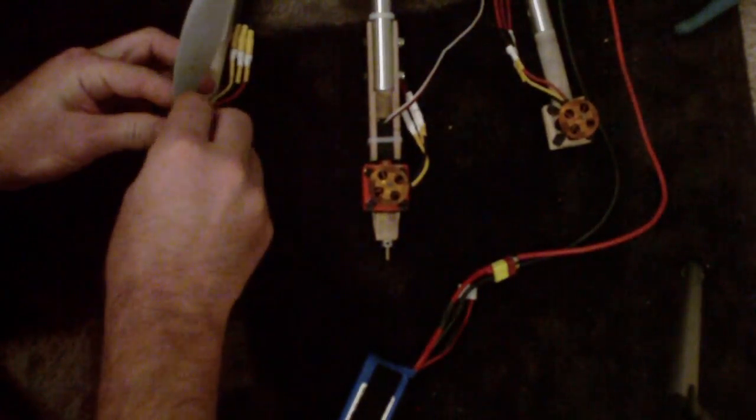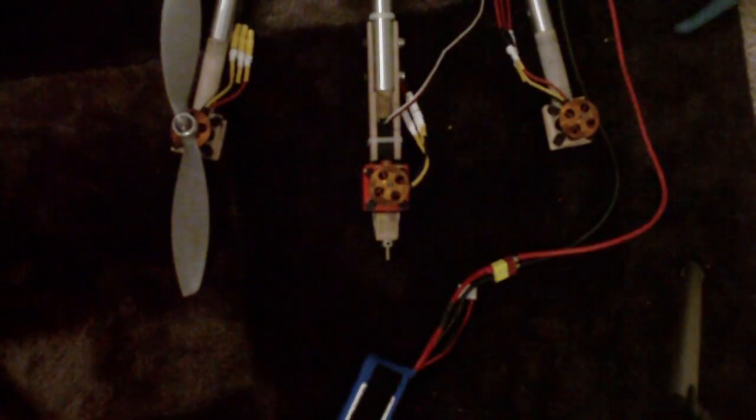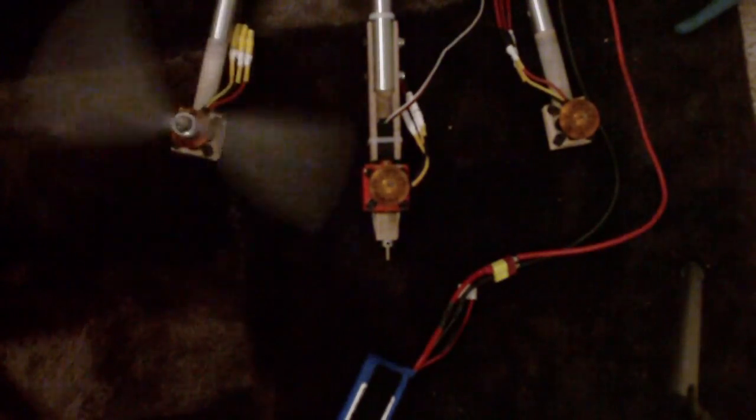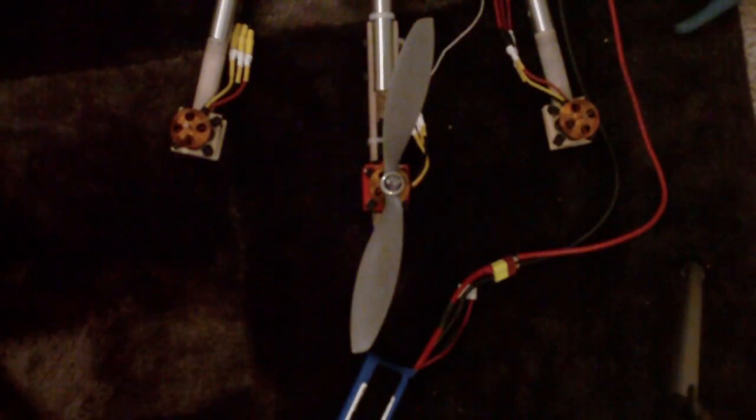Let's try that one more time just a little bit looser. There we go. And now when you spin it up you should see the prop rotating in the proper direction. You want to do that on all three motors to make sure they're rotating in the proper direction.